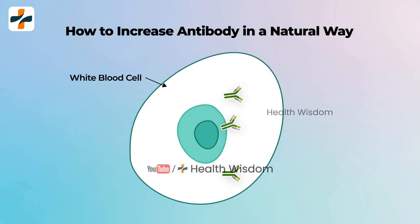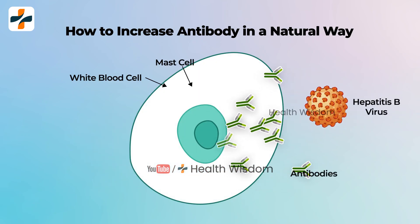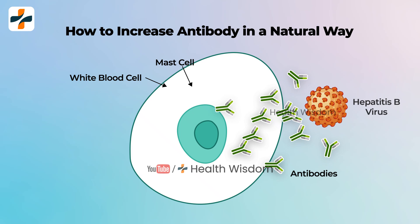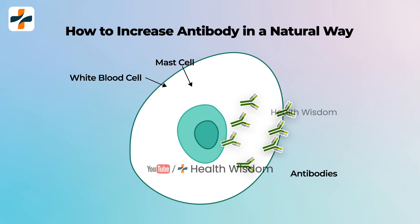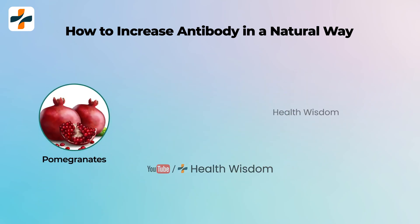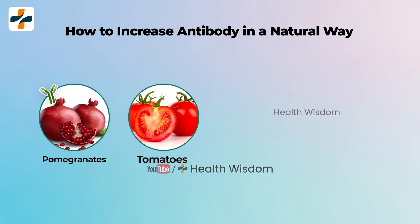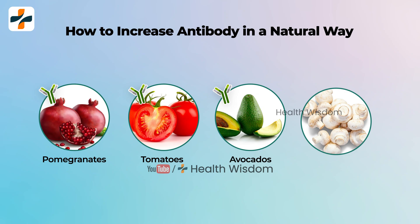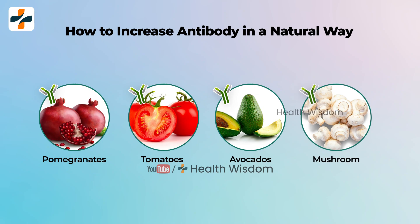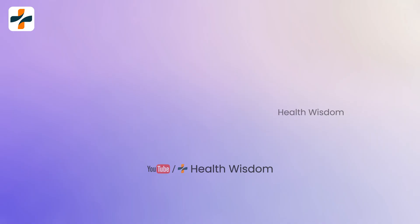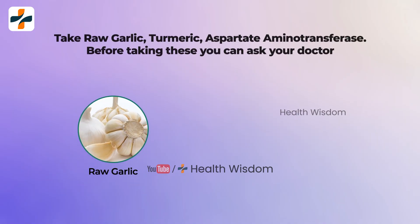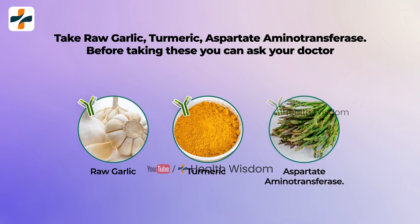How to increase antibody in a natural way: 1. Add pomegranates, tomatoes, avocados, and mushrooms to your diet. 2. Take raw garlic, turmeric, and other supplements — before taking these, you can ask your doctor.